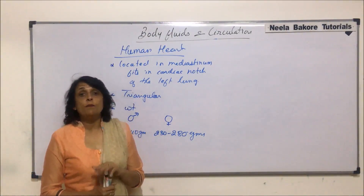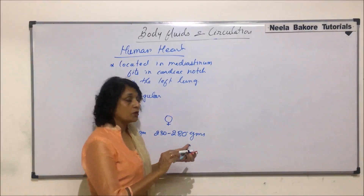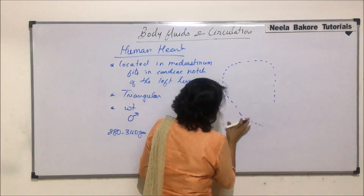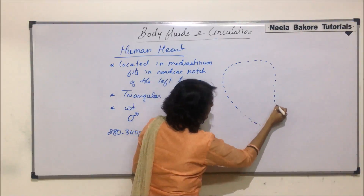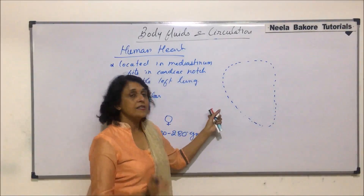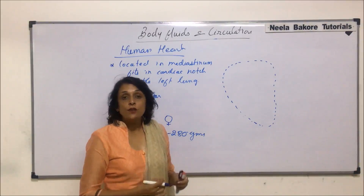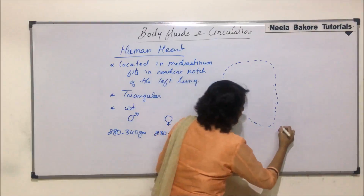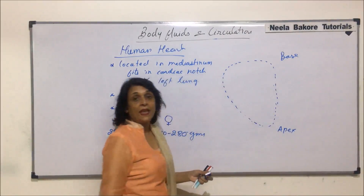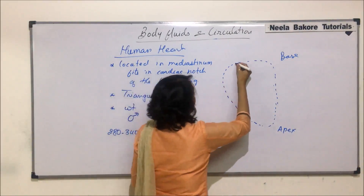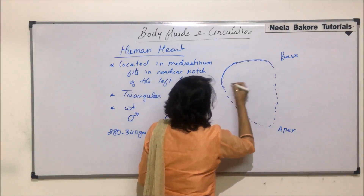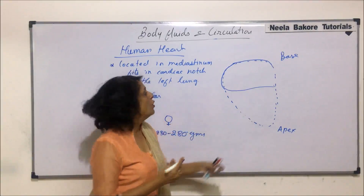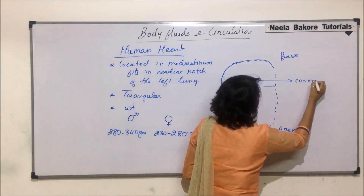When we see the heart from outside, it has a slightly triangular shape that is bent or tilted toward the left side. On its surface we find depressions called sulci. There is one depression that separates the upper part from the lower part — this is known as the coronary sulcus, which separates the auricles from the ventricles.